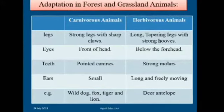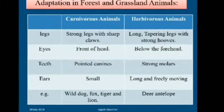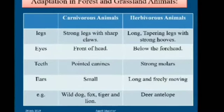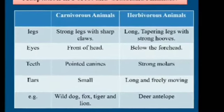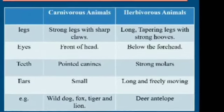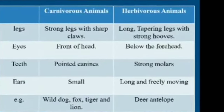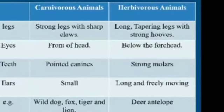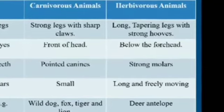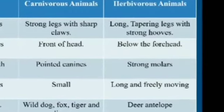Examples of carnivorous animals are wild dog, fox, tiger and lion. Examples of herbivorous animals are deer and antelope.